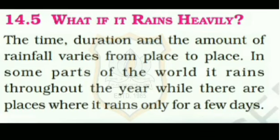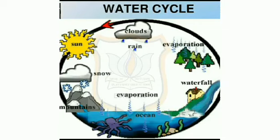What if it rains heavily? The time, duration and the amount of rainfall varies from place to place. In some parts of the world it rains throughout the year, while there are places where it rains only for a few days. Thus, the water cycle can be defined as a continuous movement of water from the earth's surface and water bodies as water vapor to the atmosphere, and from the atmosphere back to the earth's surface as rain, hail or snow. This cycle maintains the supply of water on land.